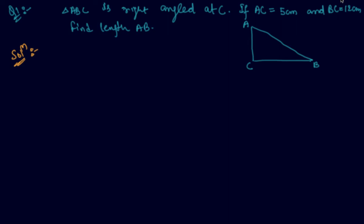Here is a question: ABC is a right angle triangle with the right angle at C, so this angle is 90 degrees. We are given AC = 5 cm and BC = 12 cm, and we have to find the length of AB, which is the hypotenuse.